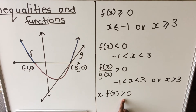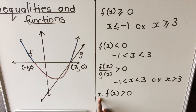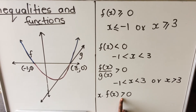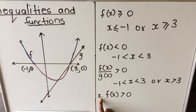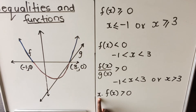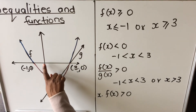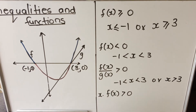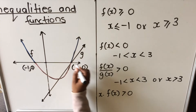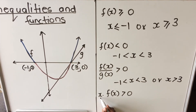The last one is slightly different. We're looking at x multiplied by f(x) being positive. All x-values from the origin going left are negative; going right they are positive. So I need to find where x and f(x) are either both positive or both negative.